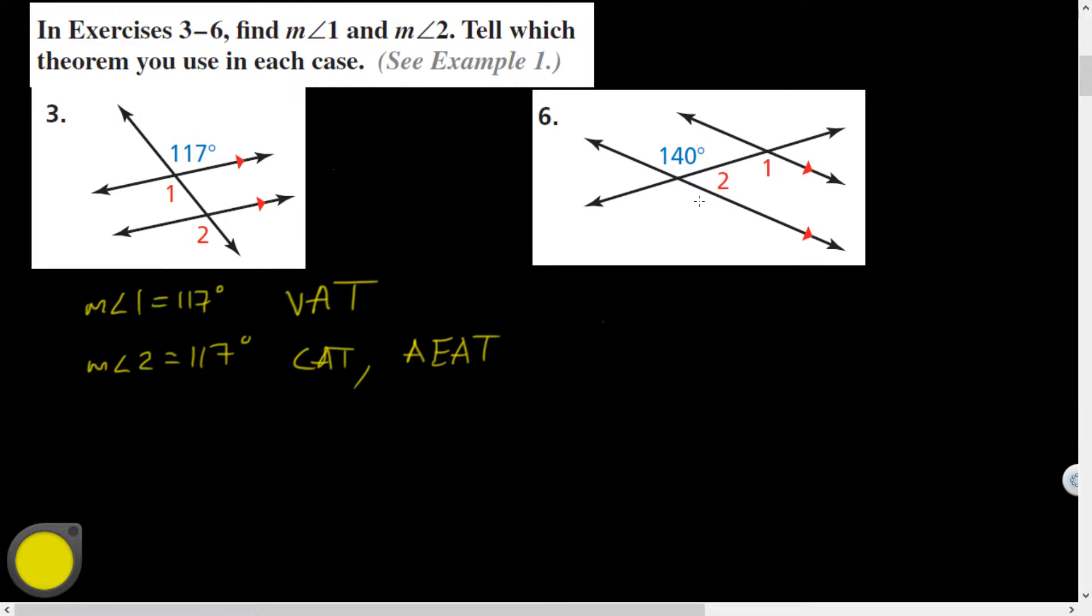Alright, you tracking this? Alright, question 6. Measure of Angle 1 is going to be congruent to the 140. So measure of Angle 1 is equal to 140. Why is that? Someone tell me. Alternate Interior Angles Theorem.